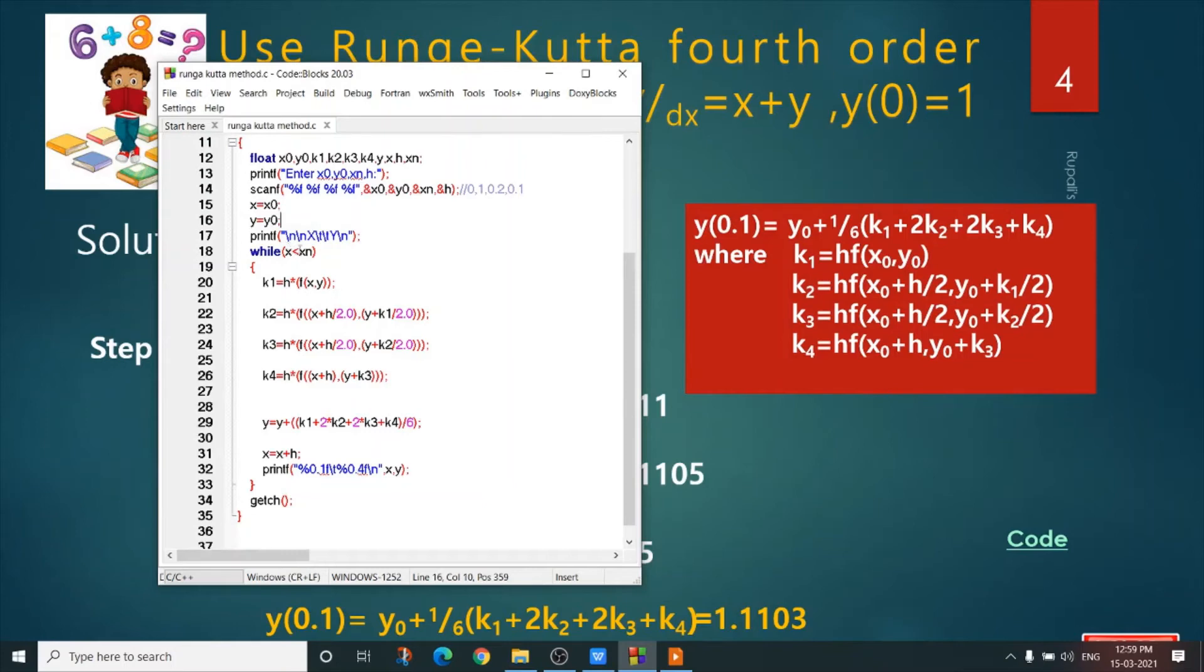x is 0 and xn is 0.2. This loop will execute till the value of x becomes 0.2 and I increase x within the loop.